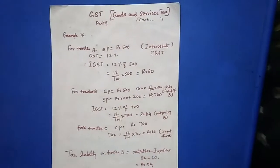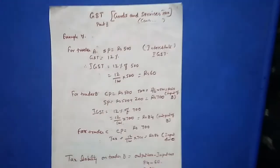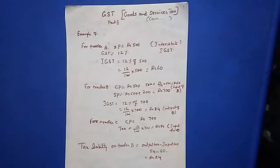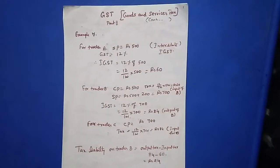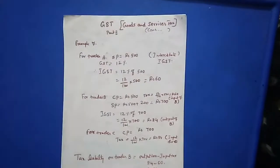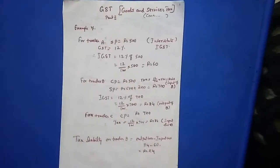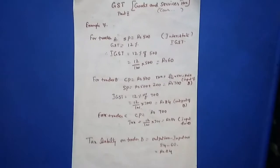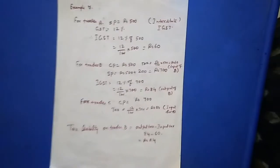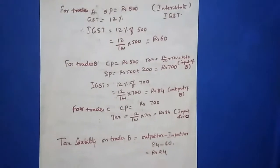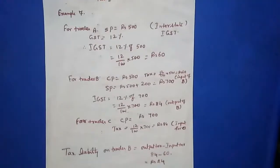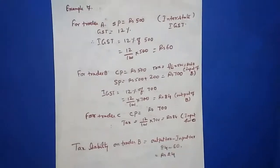Hello students. We are covering GST - Goods and Services Tax. I think all students have finished Exercise 1. I explained many sums already. Now I am going to explain Example 7. See the question in your textbook - Example 7. I am going to explain how to do these sums.